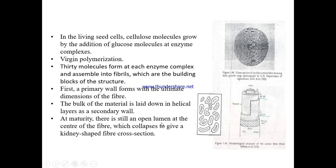At maturity, there is still an open lumen at the center of the fiber, which collapses to give a kidney-shaped fiber cross-section. As seen in the scanning electron microscope image, the morphology of a single cotton fiber shows the primary cell wall, secondary cell wall, and lumen, with the helical arrangement of fibrils on both cell walls.